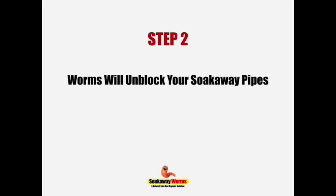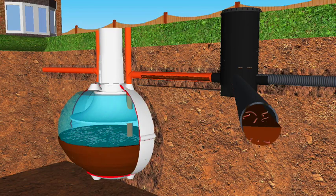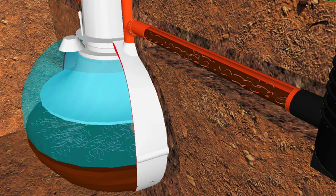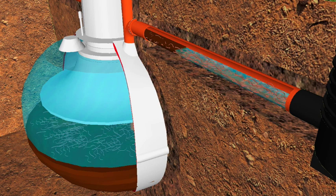Step two: the worms will very quickly start to eat and digest the sludge, fat, and grease that are blocking your soak away pipes. As the worms eat and remove the sludge, the soak away pipes will allow the wastewater to flow freely once again.